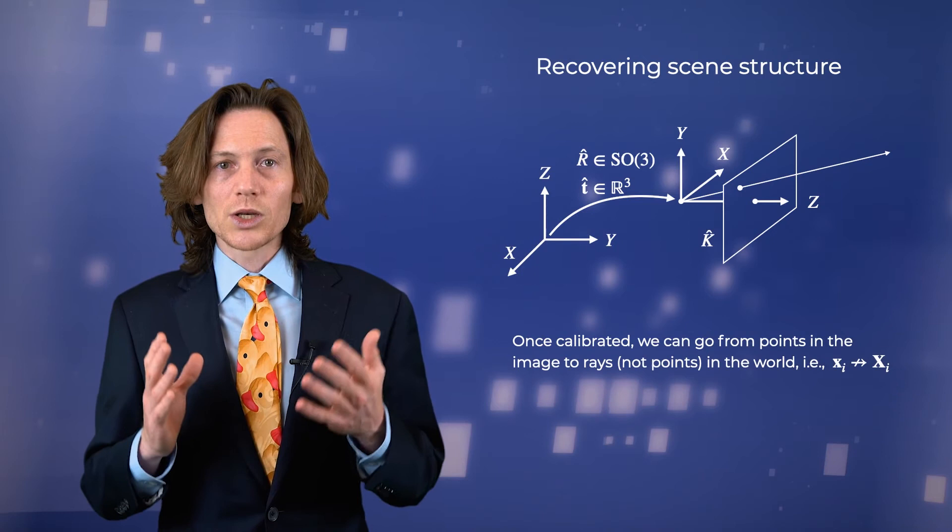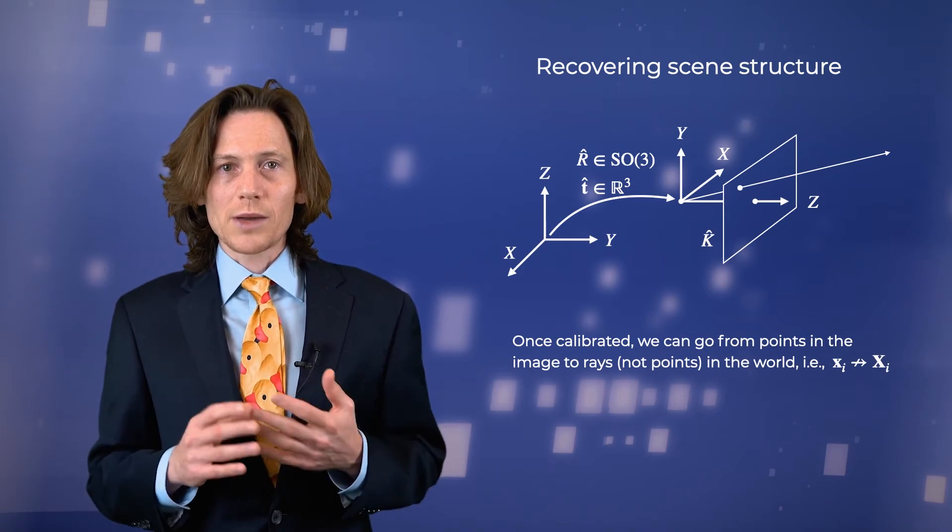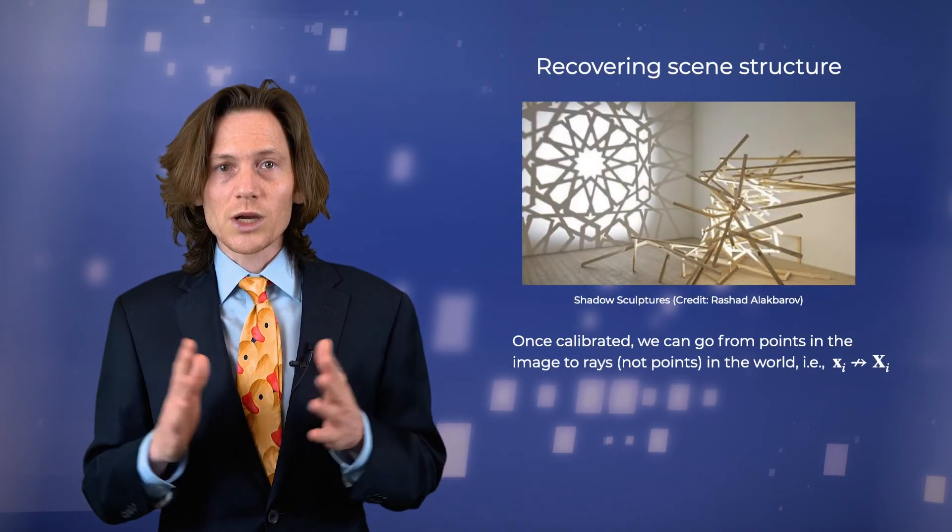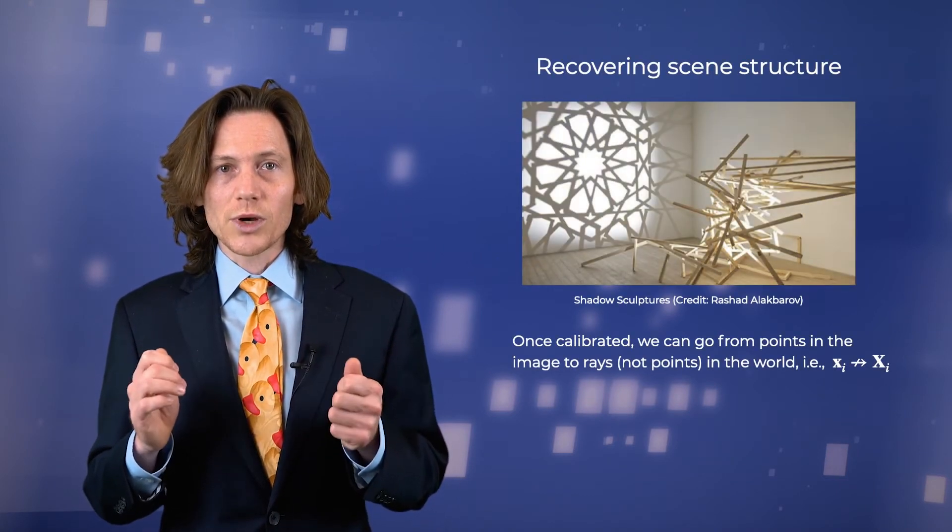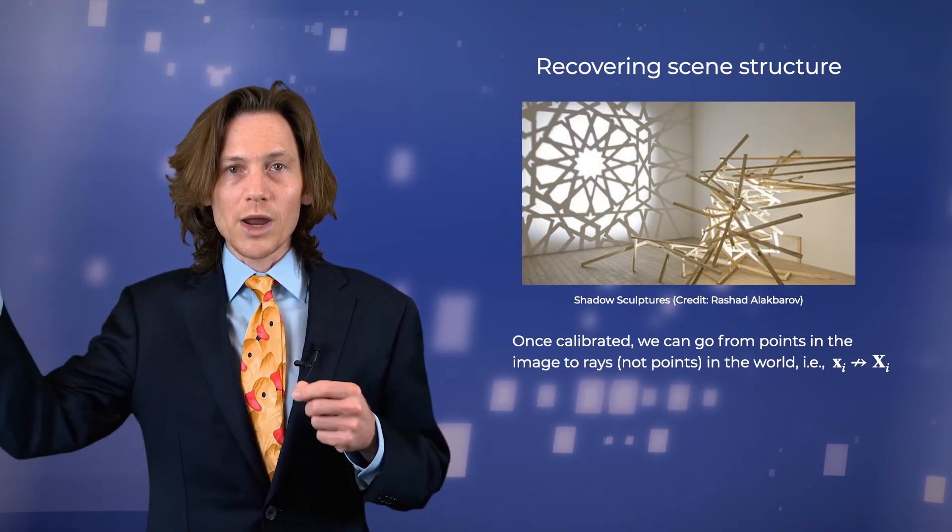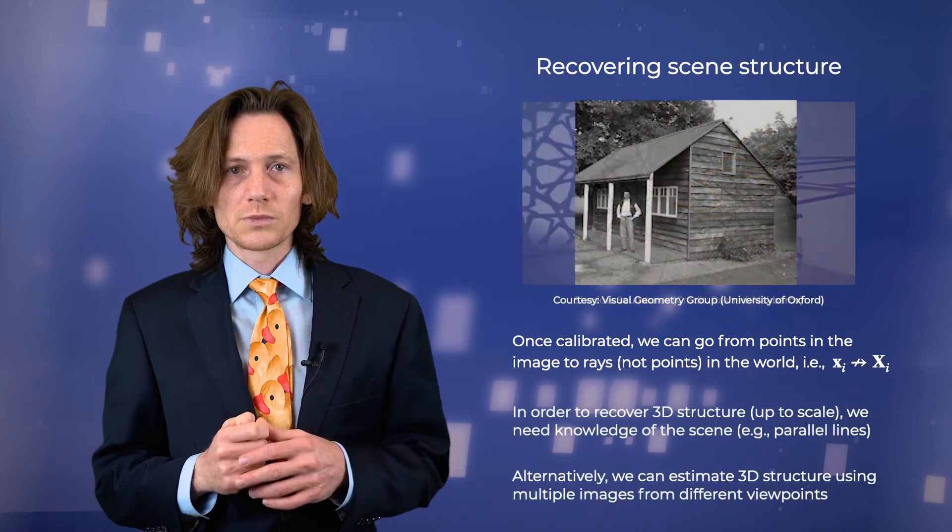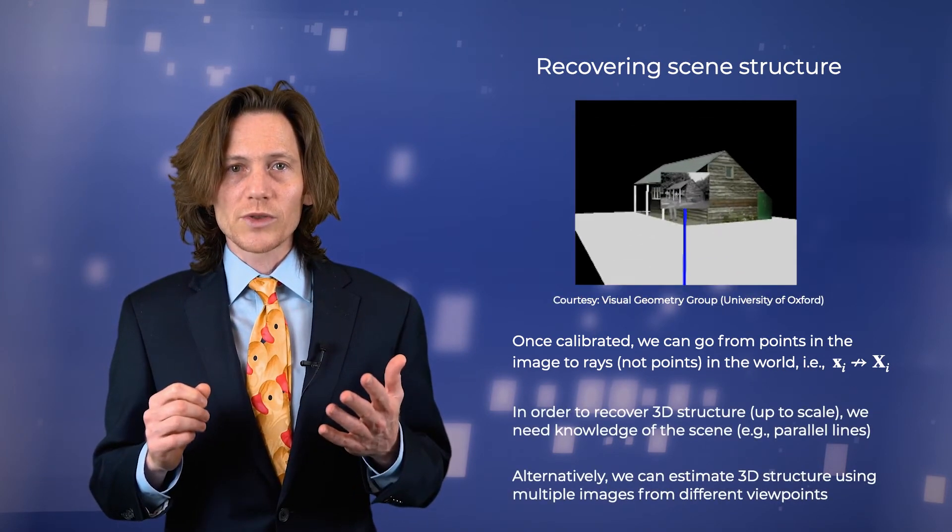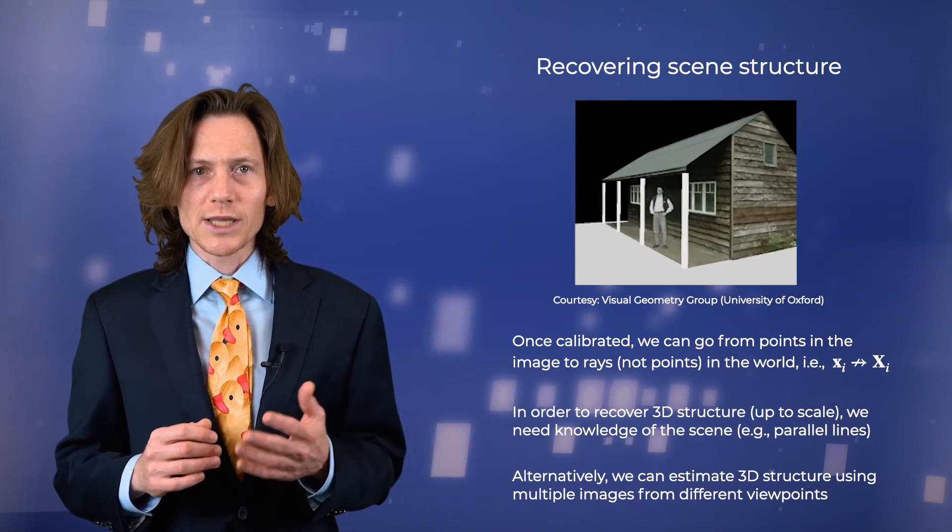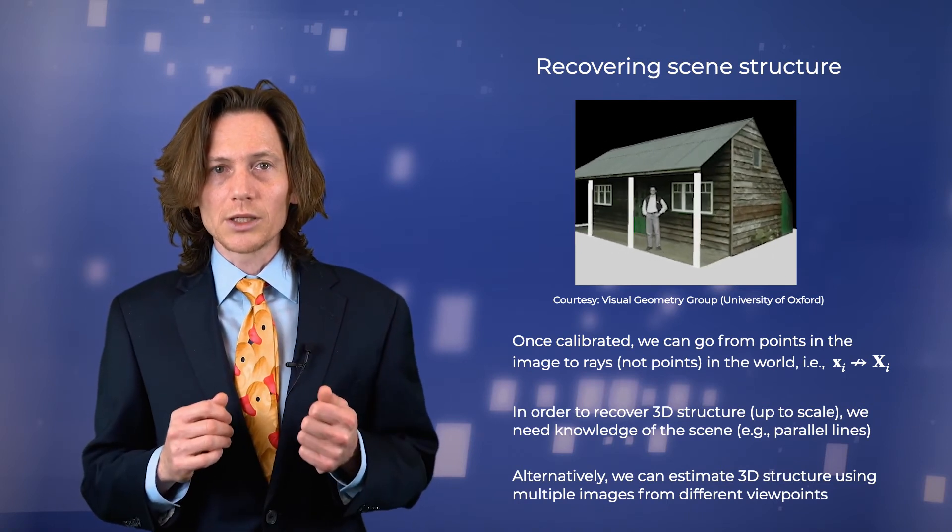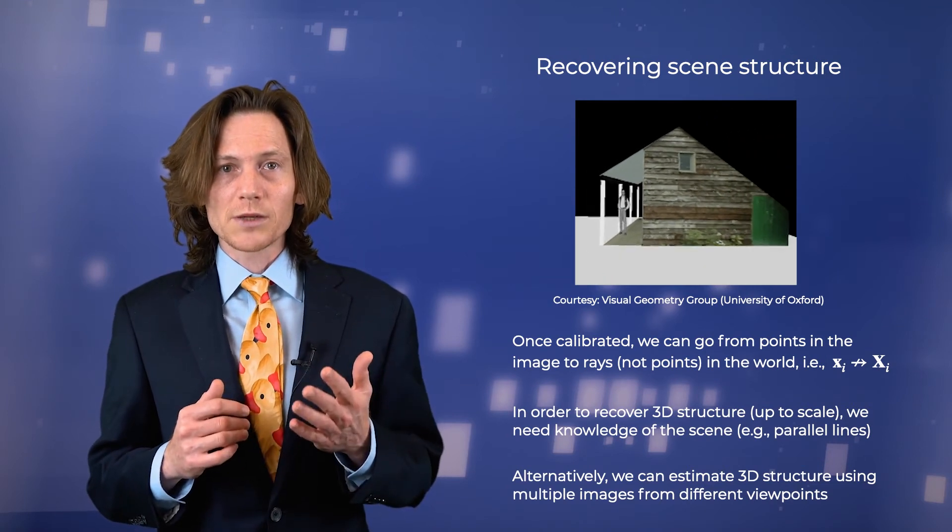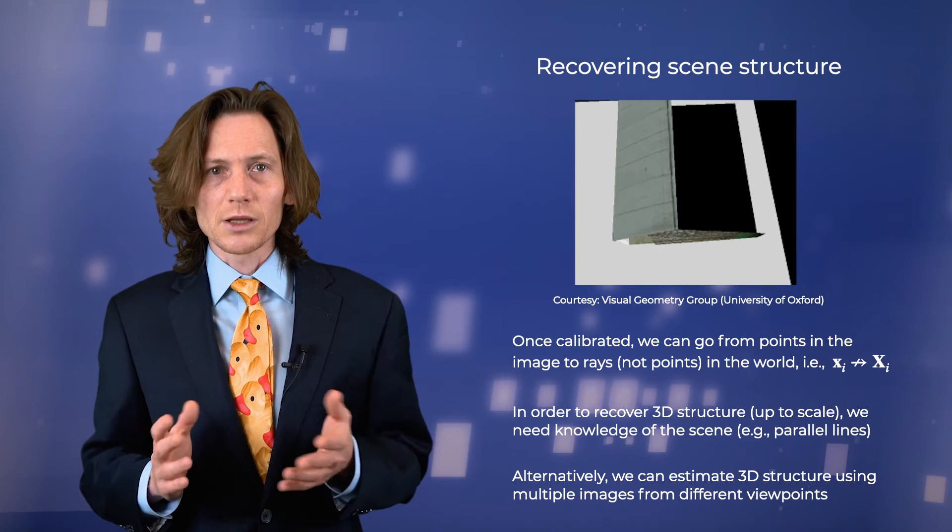Having calibrated the camera, we can use the resulting intrinsic and extrinsic parameters to relate image coordinates with their corresponding rays in 3D. Critically, we can't recover the 3D coordinates of the original scene points because of the many-to-one nature of perspective projection, whereby all points that lie along a common ray project onto the same point in the image. One way to recover additional structure of the scene is to take advantage of prior knowledge of the environment. For example, knowing that lines in the image are actually parallel in the world allows us to exploit properties of perspective projection to recover 3D structure, up to scale, of course.